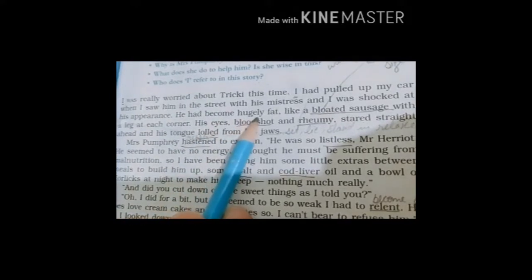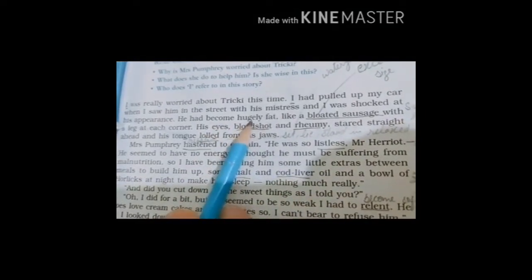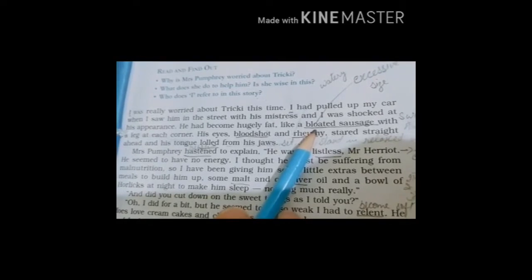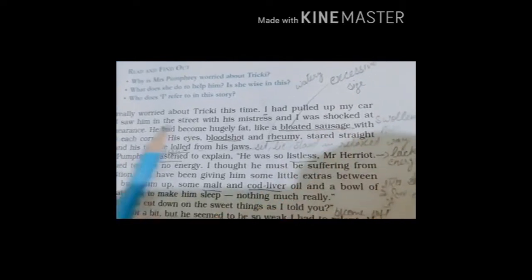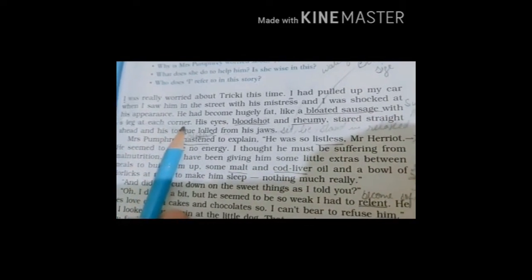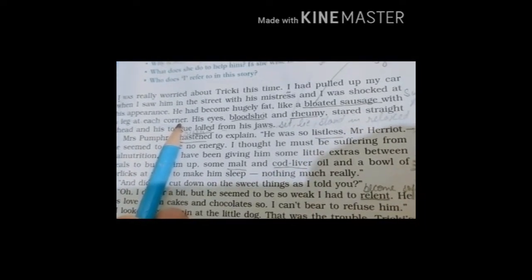He had become hugely fat like a bloated sausage. Bloated here means excessive in size. And sausage means swollen meat with a leg at each corner. Now I would like to show you again in the picture how fat he had become, with a leg at each corner. You can see only the legs.